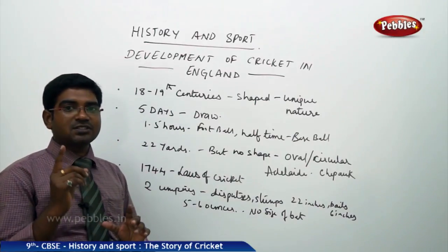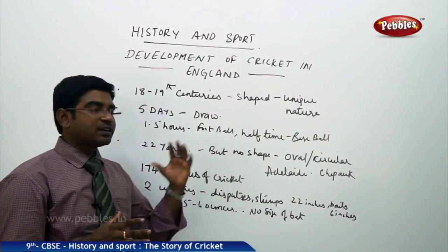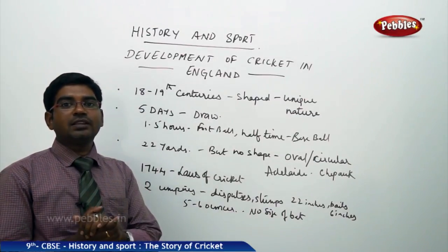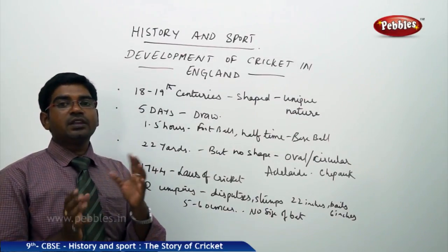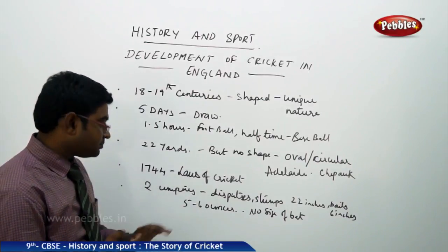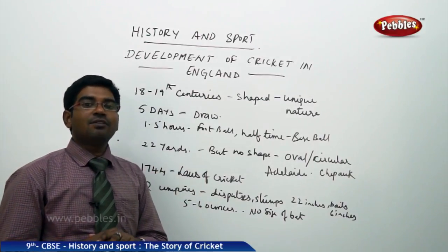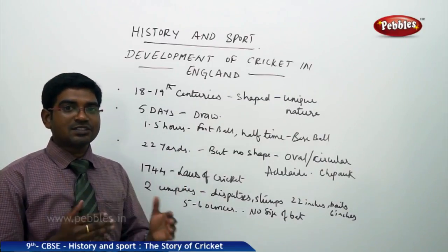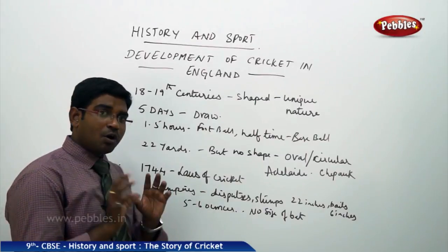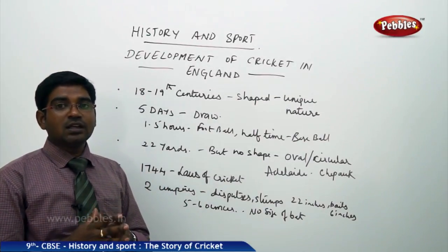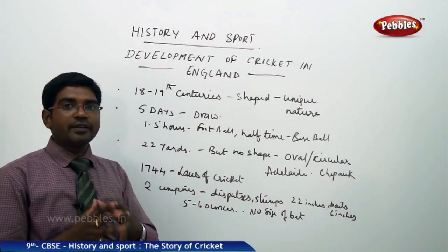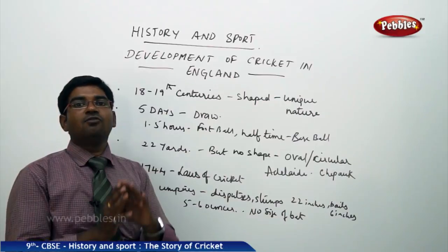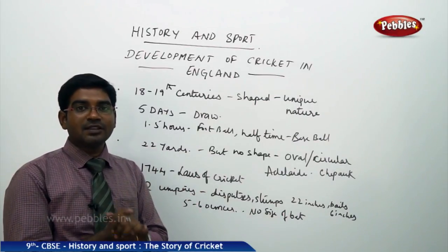In 1744, for the first time, the laws of cricket were made. According to these, two umpires were appointed to settle disputes between both parties. The stumps should be 22 inches high, and the bails between them should be 6 inches. The ball should weigh 5 to 6 ounces, and the size of the bat was not yet fixed. These are the base rules which make cricket a very different game from existing games.